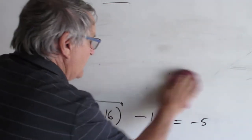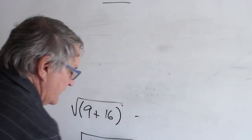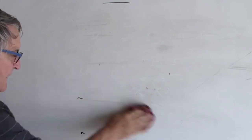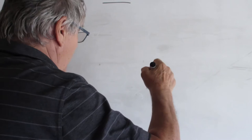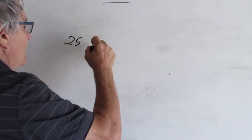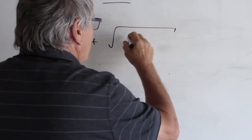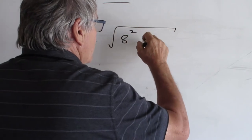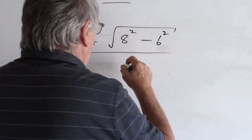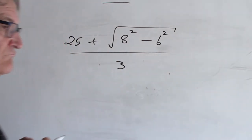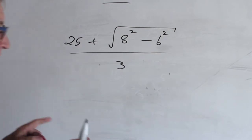Let's do another one similar to a question that appeared on a recent exam. And it was something like 25 plus the square root of 8 squared minus 6 squared, all divided by 3. You can do that in one go in your calculator.